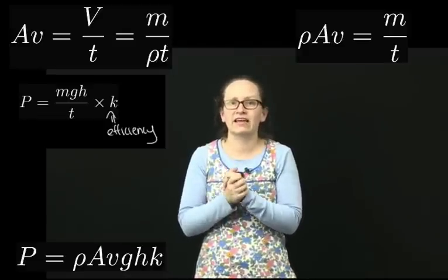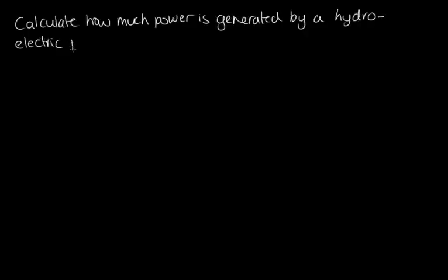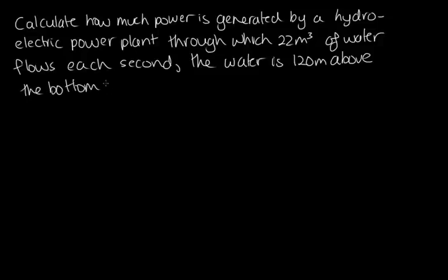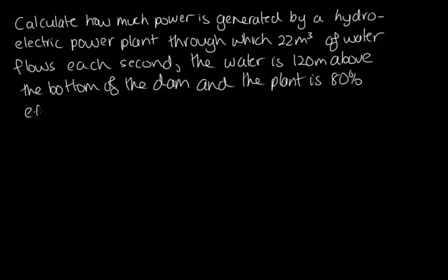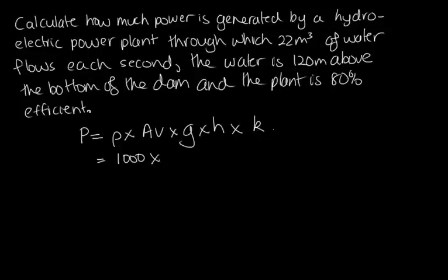Calculate how much power is generated by a hydroelectric power plant through which 22 metres cubed of water flows each second. The water is 120 metres above the bottom of the dam and the plant is 80% efficient. We use the formula: power equals density times volume flow rate (A·v) times g times h times k. The density of water is 1,000 kilograms per metre cubed, and the volume flow rate A·v is 22.